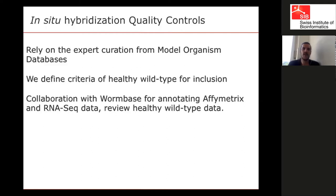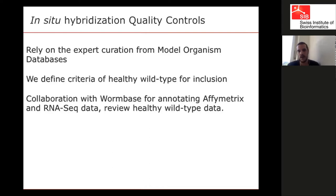For in situ hybridization data, we rely on information from model organism databases — in situ data are annotated by databases such as ZFIN or WormBase. We rely on their expert curation, and with some of them we have an ongoing collaboration. For example, with WormBase for C. elegans, we collaborate on annotating Affymetrix and EST data. In BG, we focus only on the healthy wild type while they also annotate gene knockouts and various treatments.